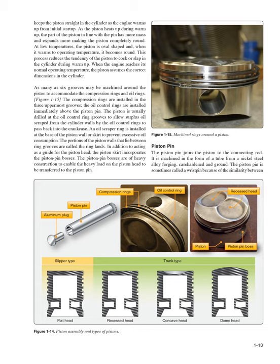As many as six grooves may be machined around the piston to accommodate compression rings and oil rings. The compression rings are installed in the three uppermost grooves; the oil control rings are installed immediately above the piston pin. The piston is usually drilled at the oil control ring grooves to allow surplus oil scraped from the cylinder walls to pass back into the crankcase. An oil scraper ring is installed at the base of the piston skirt to prevent excessive oil consumption. The portions of the piston walls between ring grooves are called ring lands. The piston skirt incorporates the piston pin bosses, which are of heavy construction to transfer the heavy load on the piston head to the piston pin.